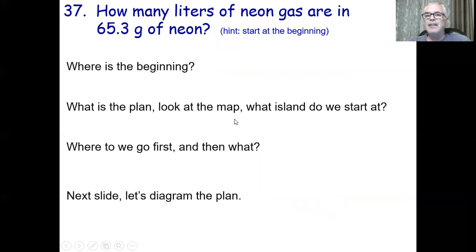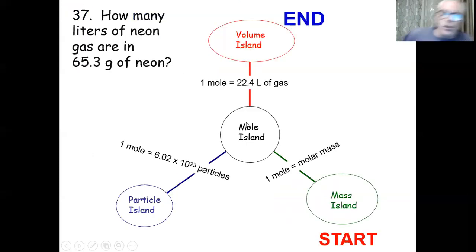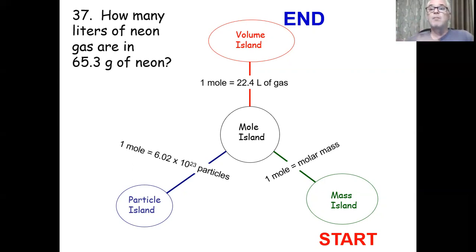How many liters of neon gas are in 65.3 grams of neon? Let's make a plan. We're starting with grams — that's Mass Island. From Mass Island there's only one place to go: convert to moles. We can't go directly to liters; the shark will eat us. Once we get to Mole Island, we do another conversion to get to Volume Island. It's going to be a two-step math problem — start at mass, go to moles, then go to volume.